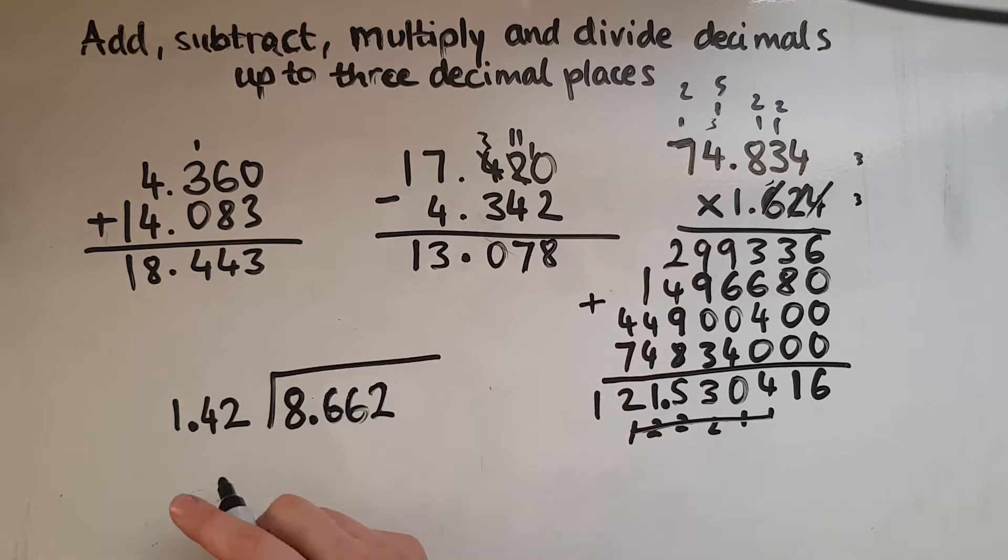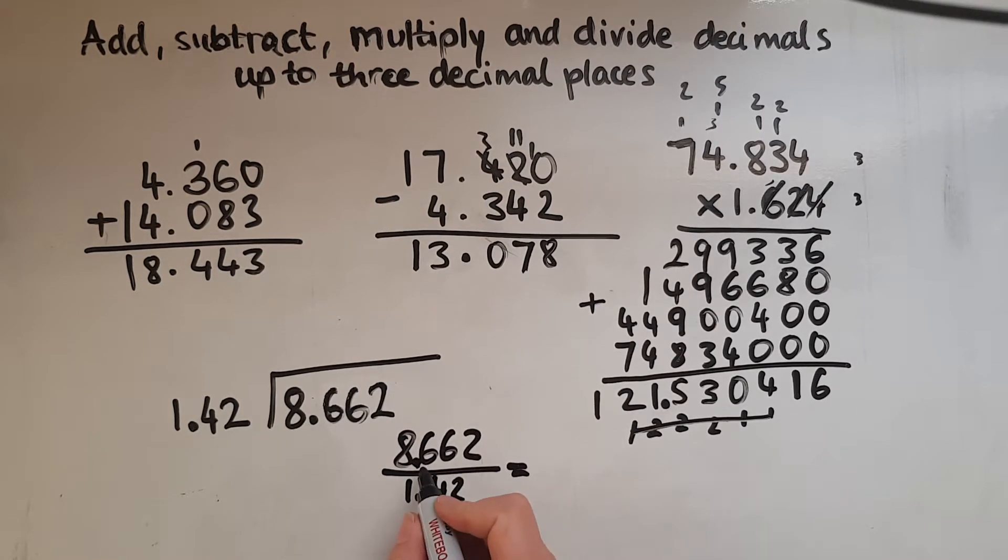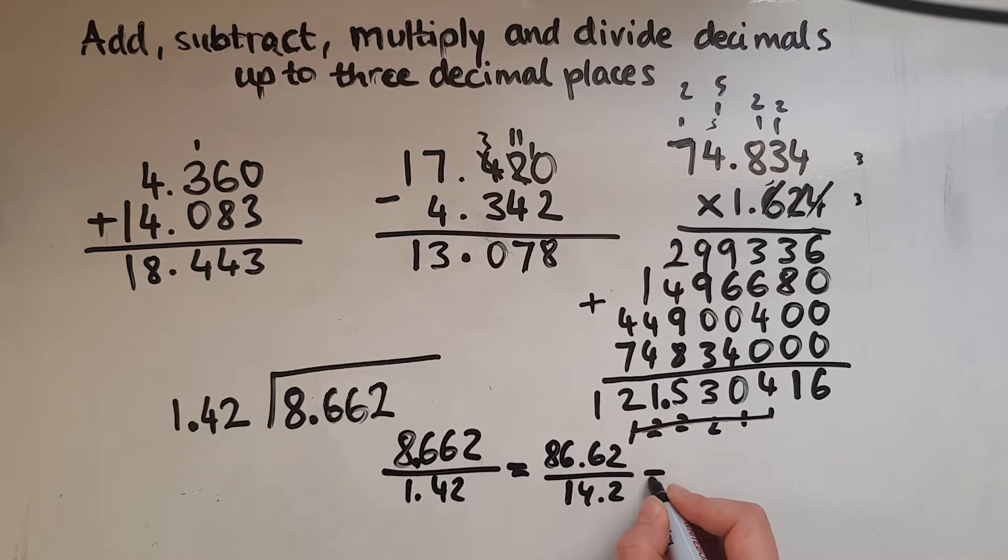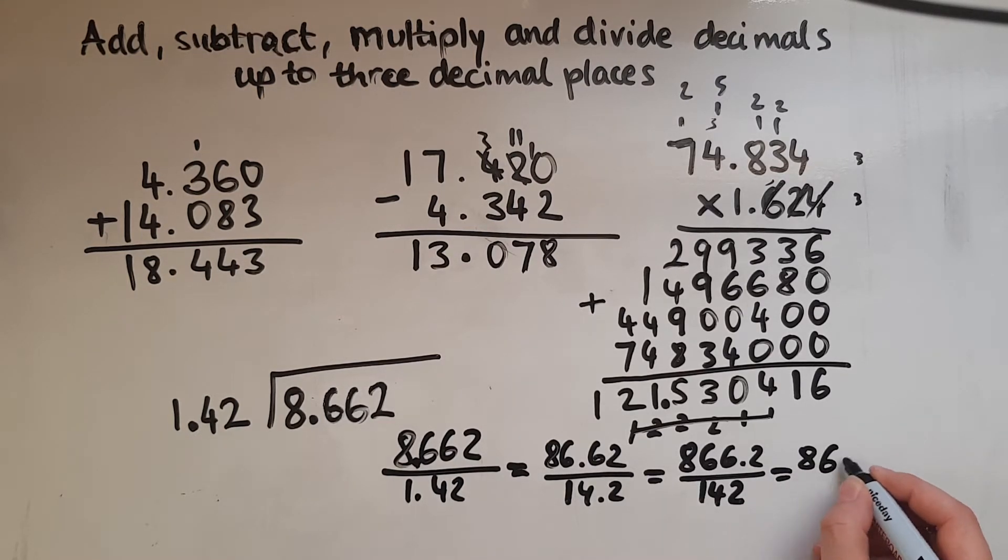Now we'll look at division. So we're dividing 8.662 by 1.42. So in order to turn this into whole numbers so that we can easily work with them, we would write this as 8.662 over 1.42. So I need to get rid of these. So if I multiply them both by 10, I'd then have 86.62 over 14.2. If I multiply them both by 10 again to keep the fraction the same, I'd have 866.2 over 142. And then finally 8662 over 142. So that is whole numbers now that we can work with.